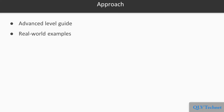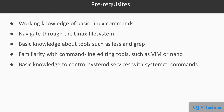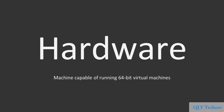This course is an advanced-level guide filled with real-world examples that will help you secure your Linux system. By the end of this course, you will be equipped with many tools at your disposal, which will help you fully protect your system. To get the most out of this course, you don't need much; however, these things would be helpful: a working knowledge of basic Linux commands and how to navigate through the Linux file system, a basic knowledge of tools such as LESS and GREP, familiarity with command-line editing tools such as VIM or Nano, and a basic knowledge of how to control systemd services with systemctl commands. For hardware, you don't need anything fancy — all you need is a machine capable of running 64-bit virtual machines. So let's get started; I promise you a great journey.